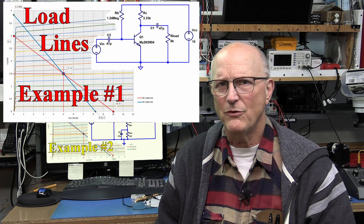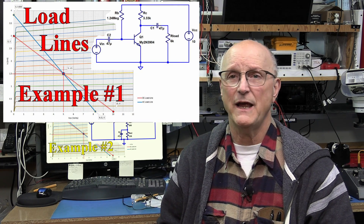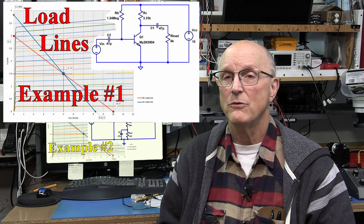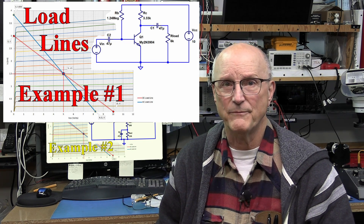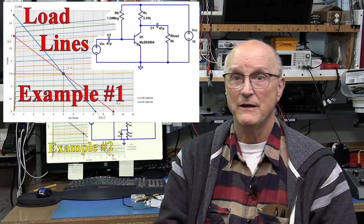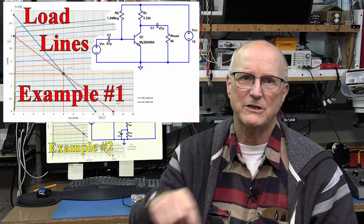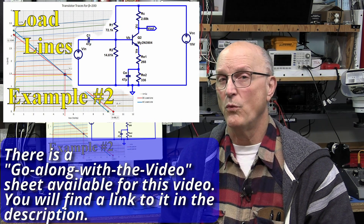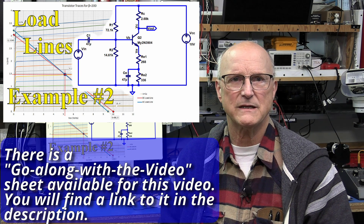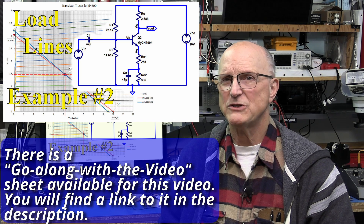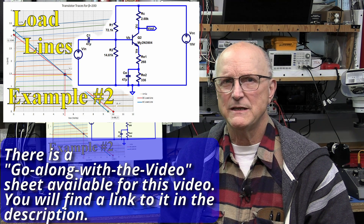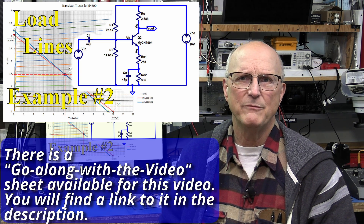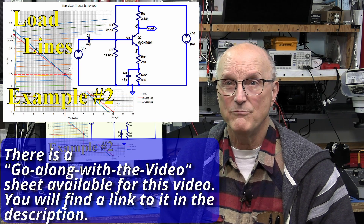This is the third video in the series on load line analysis. In the first video I laid the foundations for understanding what is going on as we proceed through this process. In the second video I walked through the process of setting up the DC and AC load lines for a very simple common emitter transistor circuit with a capacitively coupled load on its output. In this video I am now going to take this one step further with a more complex example, developing the DC and AC load lines for a beta stabilized common emitter transistor circuit with a split emitter resistor.